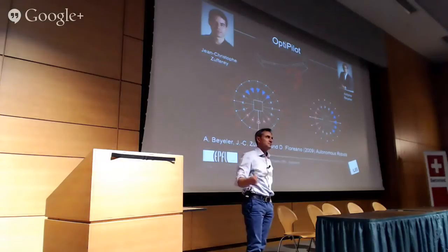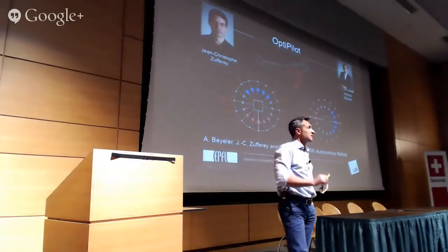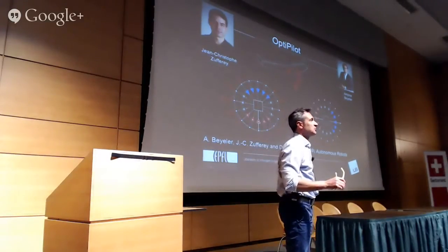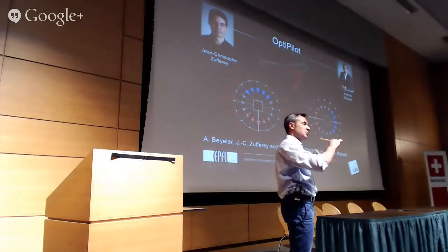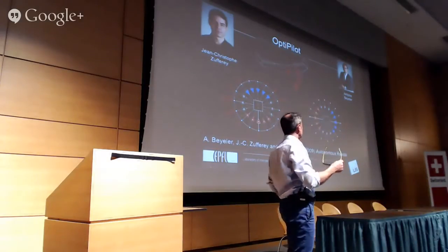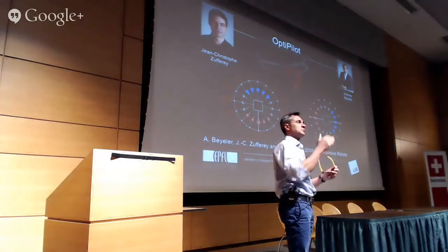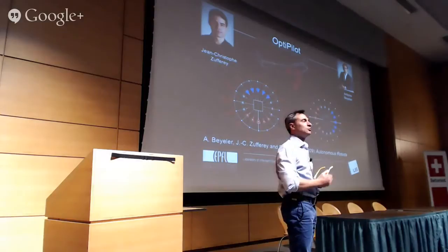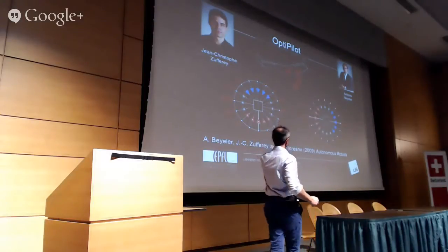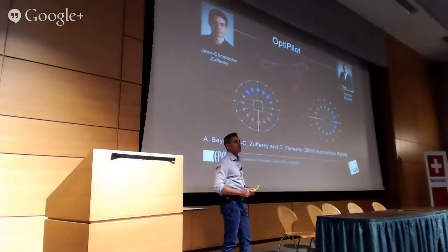For the rotational optic flow, we use gyroscopes. As the robot flies, we detect its rotational speed and subtract the predicted optic flow due to rotation from the experienced optic flow. We always end up with a pure translational optic flow, which gives us distance to objects.